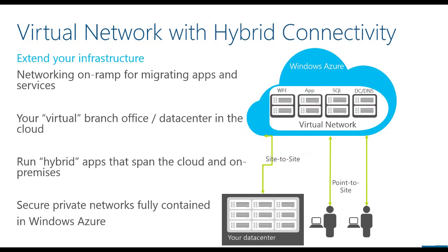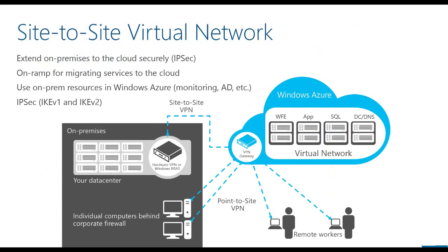Windows Azure Virtual Networks also provide the ability to extend your on-premises data center to the cloud through hybrid connectivity. This provides the networking on-ramp required to migrate existing line-of-business applications and enterprise workloads, and supports the development of hybrid applications that run in the cloud but have access to secure services and data only available on-premises through a secure IPsec tunnel. A site-to-site virtual network allows you to extend your on-premises network to the cloud, allowing the network administrator to establish a secure IPsec tunnel between local on-premises networks and the virtual network defined in Windows Azure.